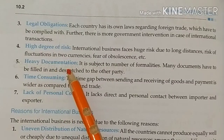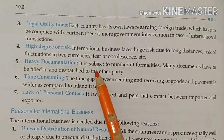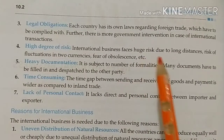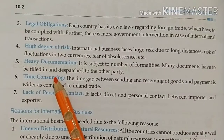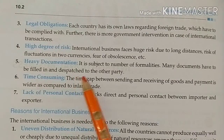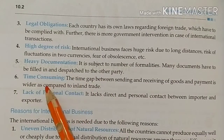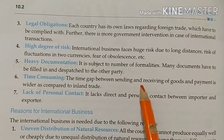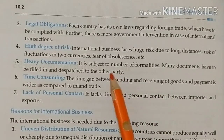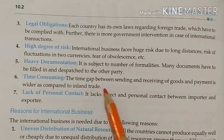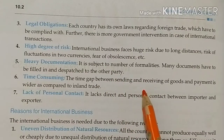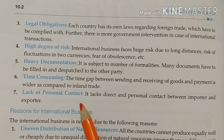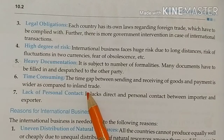The fifth feature is heavy documentation. International business is subject to a number of formalities — many documents have to be filed and dispatched to the other party. The sixth feature is that it is time consuming. The time gap between sending and receiving of goods and payment is wider as compared to inland trade.